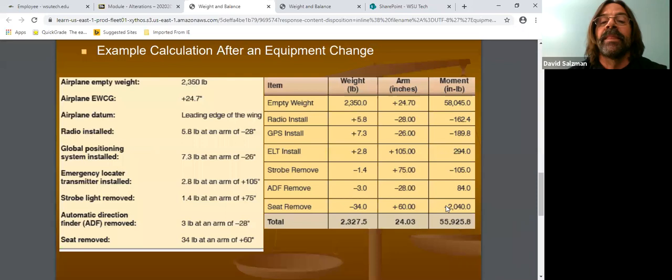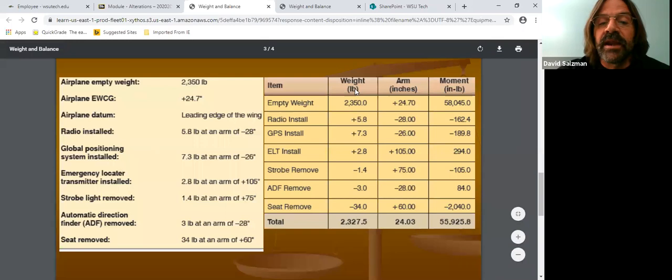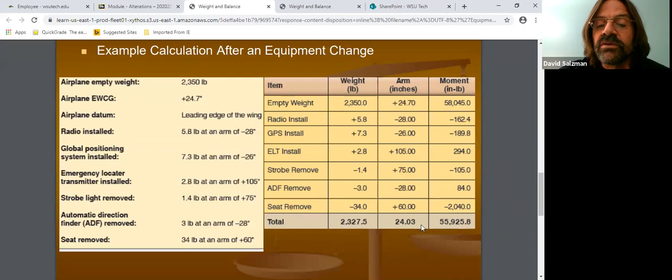So now that we have all that, all we have to do is add up our two columns. So we add up the weight. And that's going to give us 2,327.5. And then we add up the moment, which is 55,928.8. Then all we have to do is divide the moment by the weight. And that will give us our new empty weight CG, which is 24.03 inches.